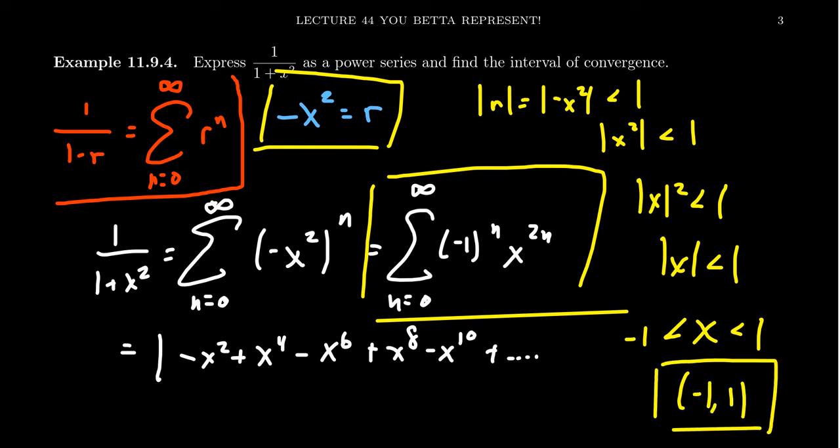I do want to mention that for a geometric power series, we don't need to use the ratio test to find the radius of convergence. It's always derived from the observation that the absolute value of r is less than 1, which leads to a simpler calculation. So we've found a power series representation for 1 over 1 plus x squared, and this equality is valid so long as x is between negative 1 and 1.